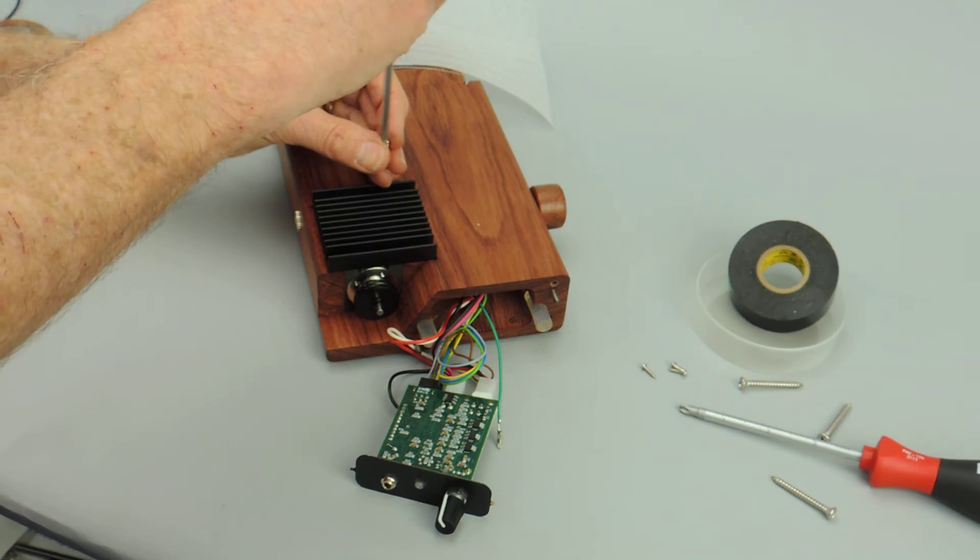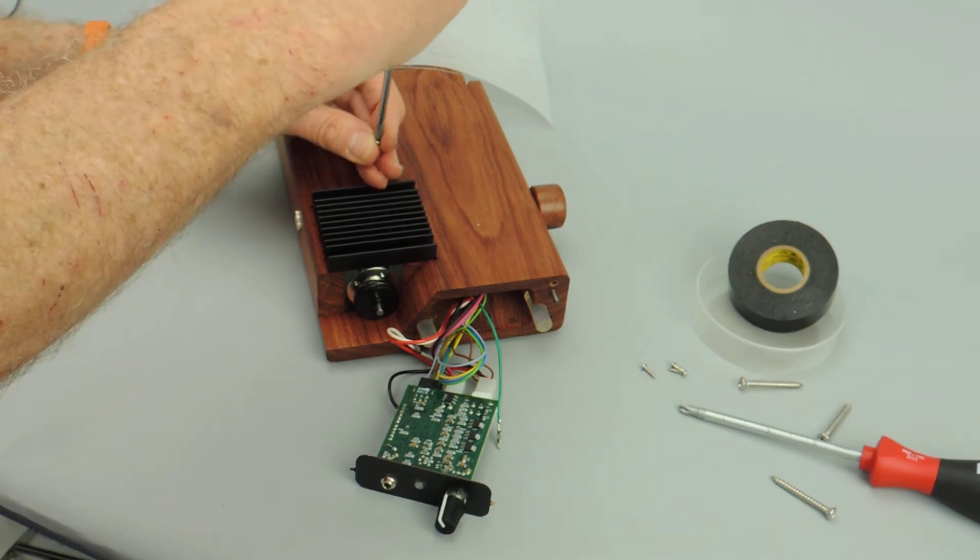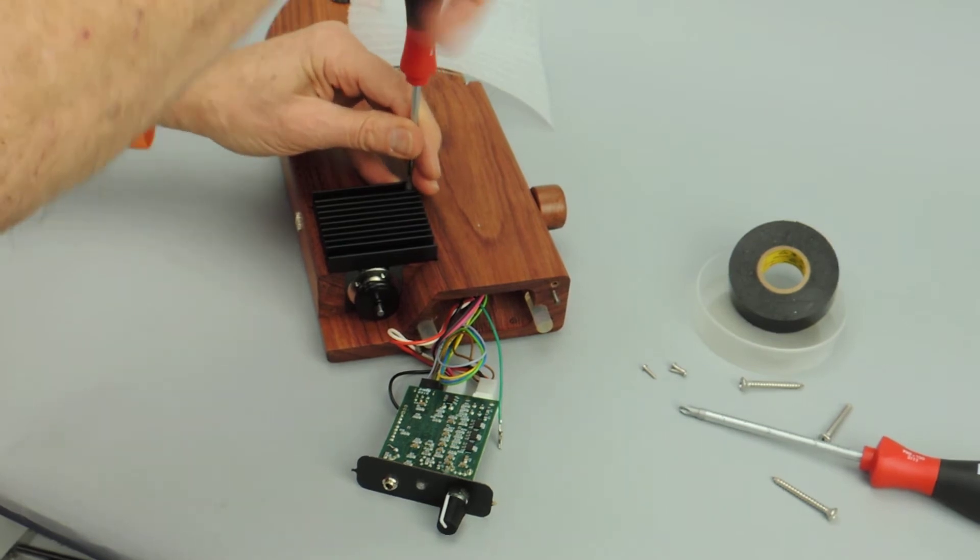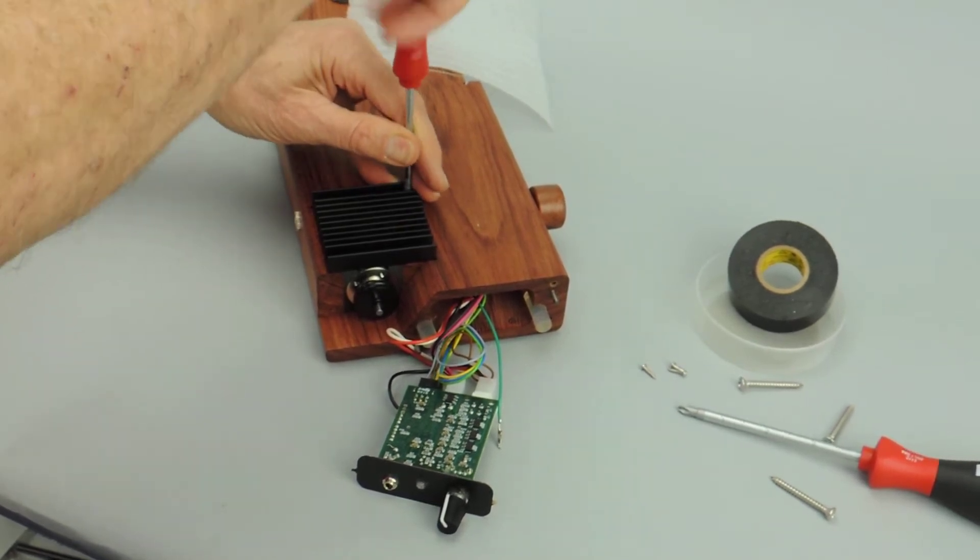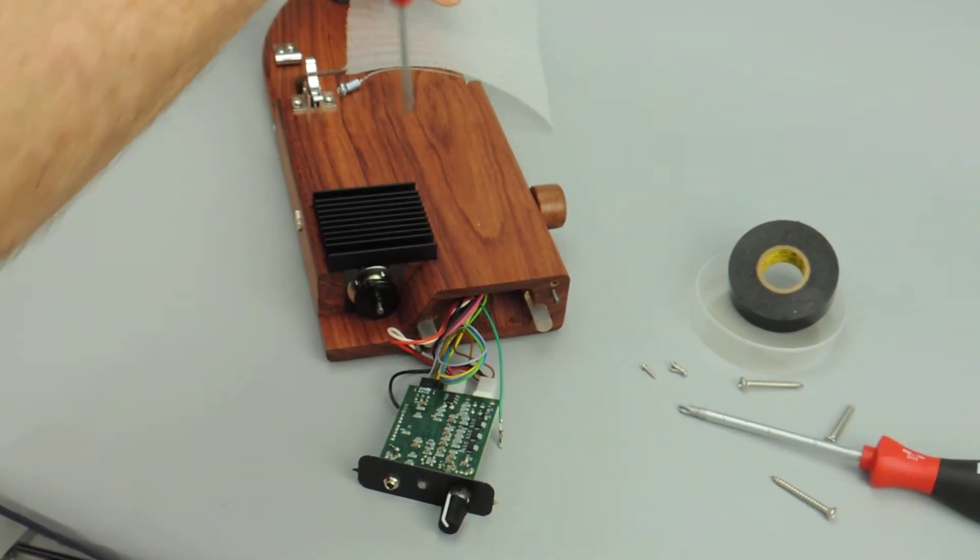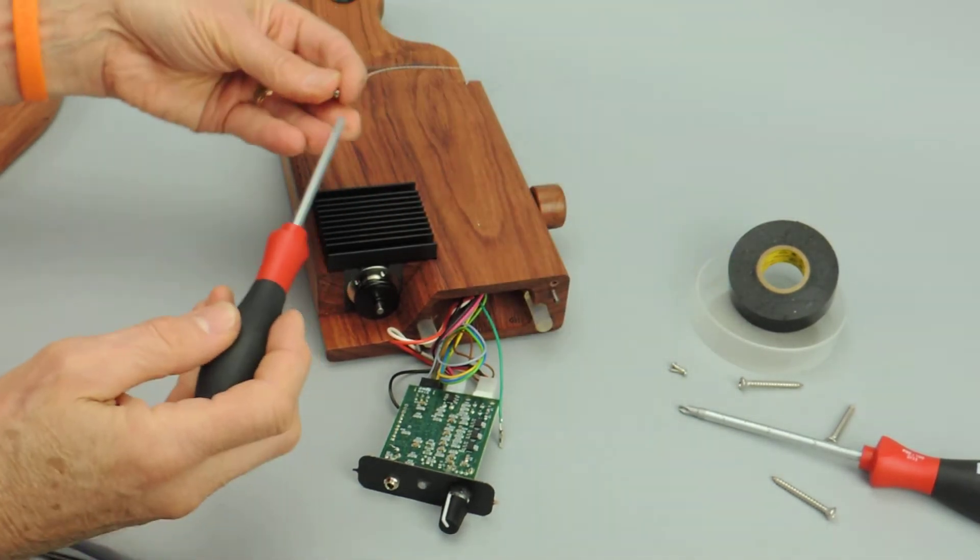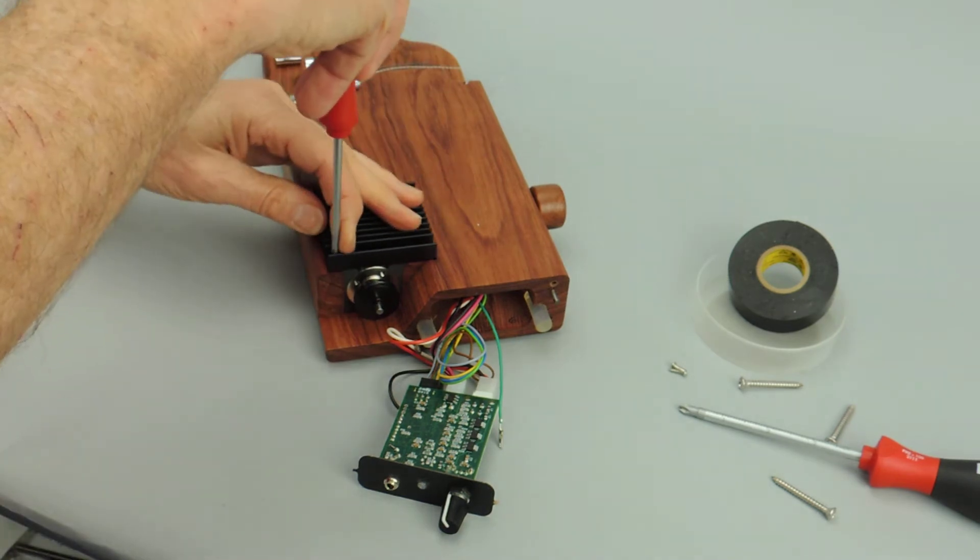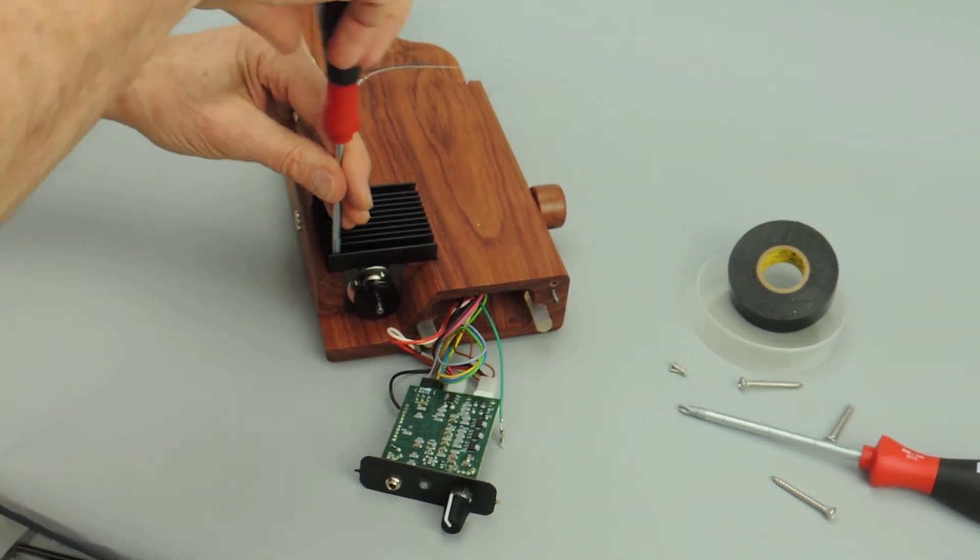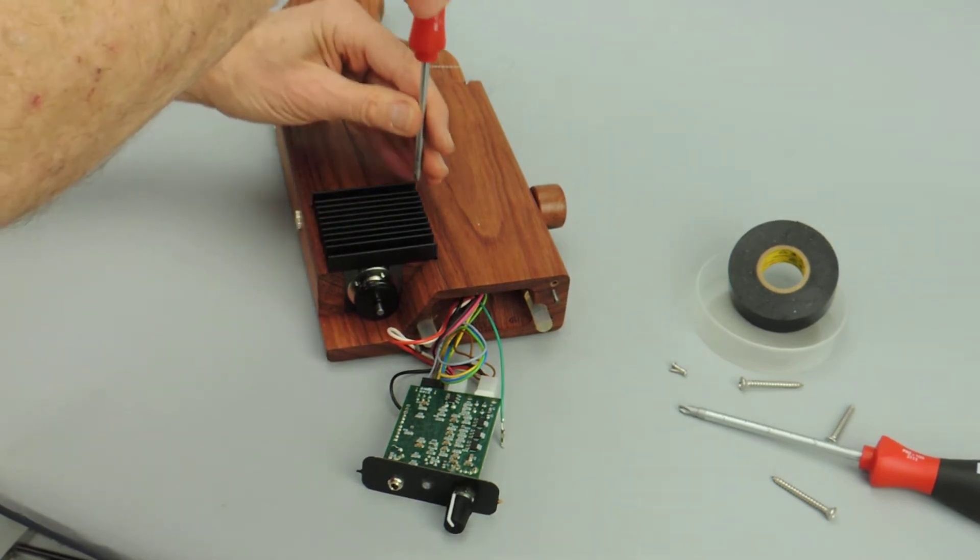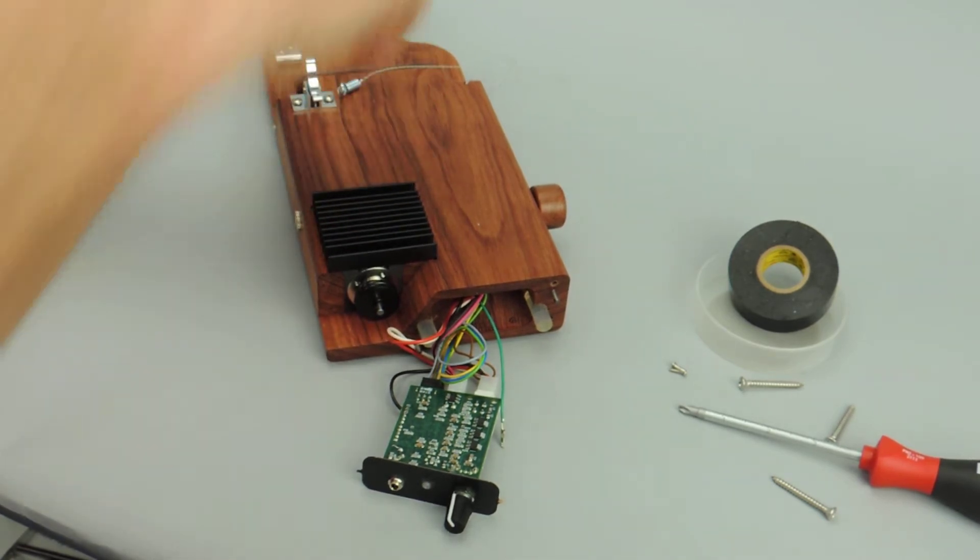Then take your number one Phillips and put the heat sink screws back in. You're done with the motor at this point. You just snug up the screws - you don't have to tighten them that tight. They're just there to hold the heat sink down, but you do want to make sure it's pulled all the way down.